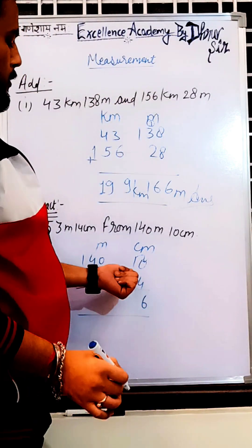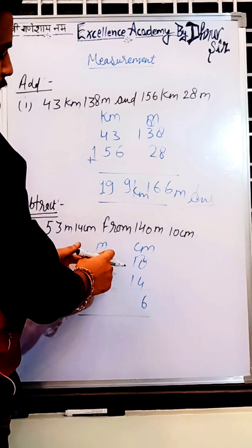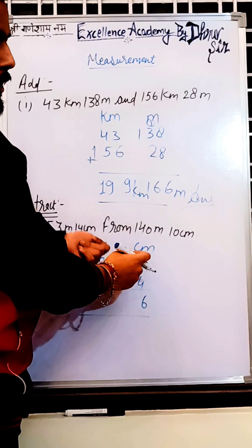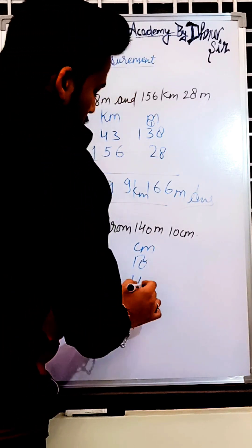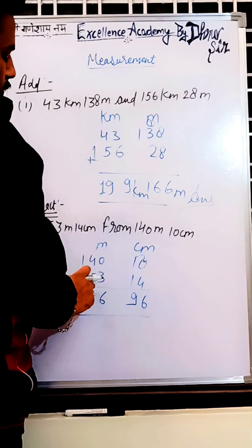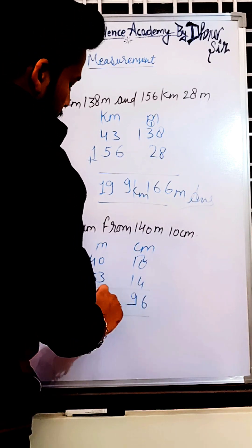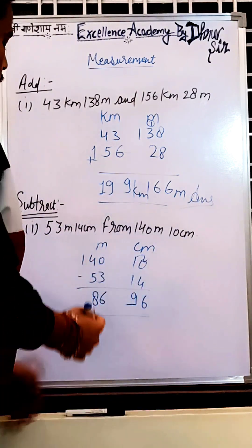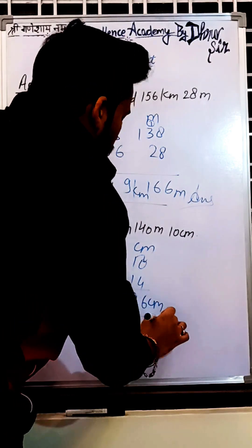After borrowing for the centimeter column, the next digit becomes 0. Since 0 minus 1 is not possible, we borrow again — that digit becomes 10, but the next becomes 9. So 10 minus 1 = 9, and 9 minus 3 = 6. For the tens: 3 minus 5 is not possible, so we borrow, giving 13 minus 5 = 8. The answer is 86 meter 96 centimeter.